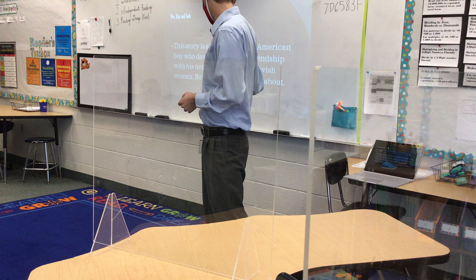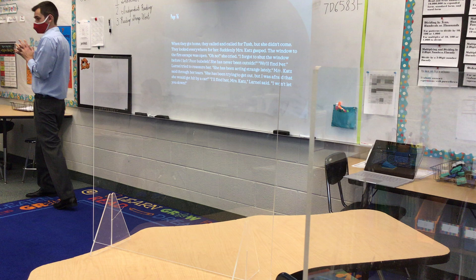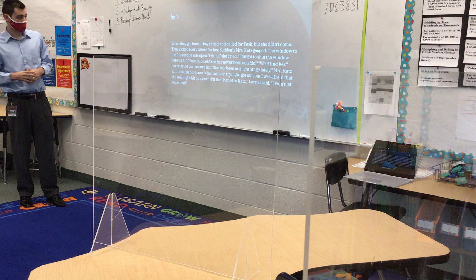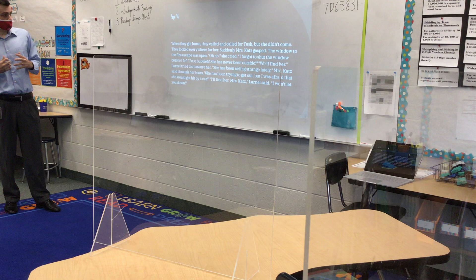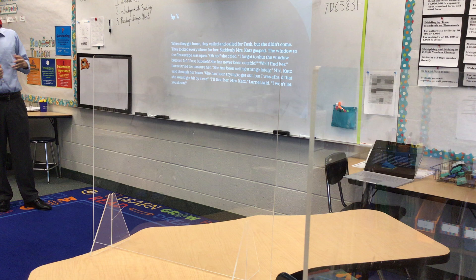But that's not all the story is about. We are going to look at page 16 — that's the only page we're looking at so far — and see if we can figure out one of the themes. Here is page 16: When they got home, they called and called for Tush, but she did not come. They looked everywhere for her. Suddenly Mrs. Katz gasped. The window to the fire escape was open. 'Oh no,' she cried. 'I forgot to shut the window before I left. Poor Bublé. She has never been outside.'